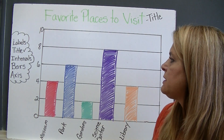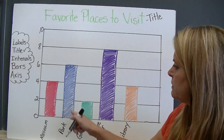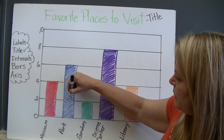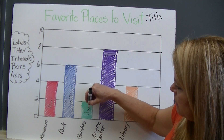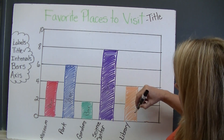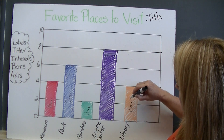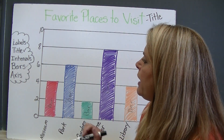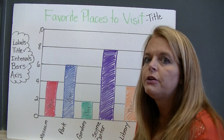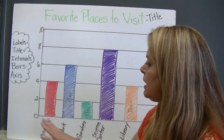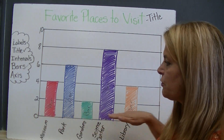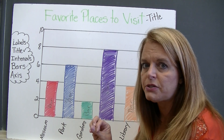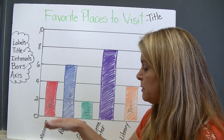Then what else is easy? The bars. Here are my bars — these rectangular blocks represent the information in different colors. Now let's look at the axes. How many are on each graph? Two. This is one axis here going across, and my other axis is here going up. This is where I start to get the information I need to read the graph. On this axis I have the words: museum, park, gardens, science center, and library — these were the choices given to people when they were asked about their favorite places to visit.